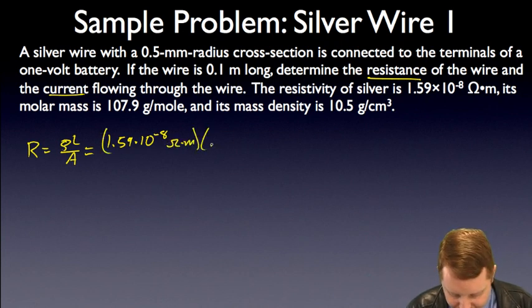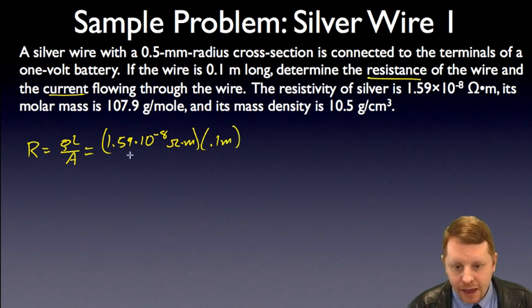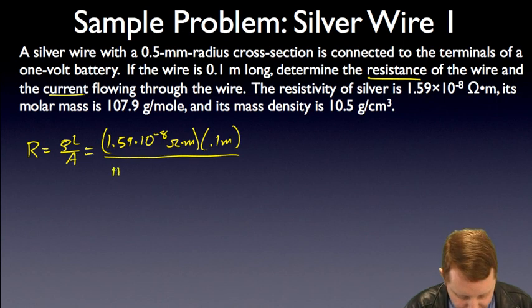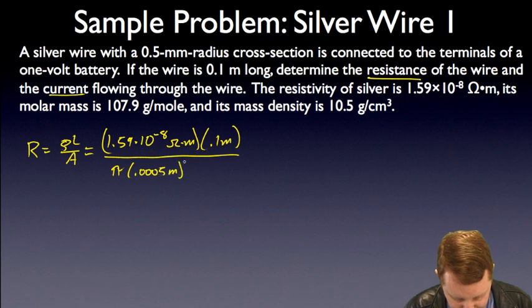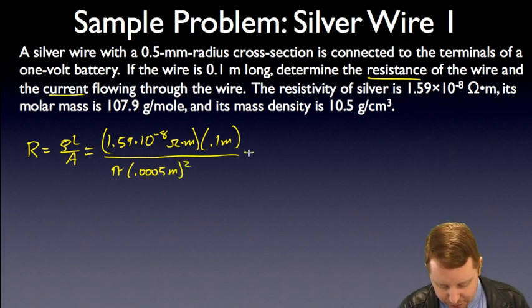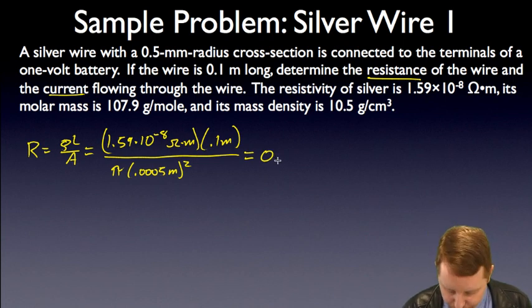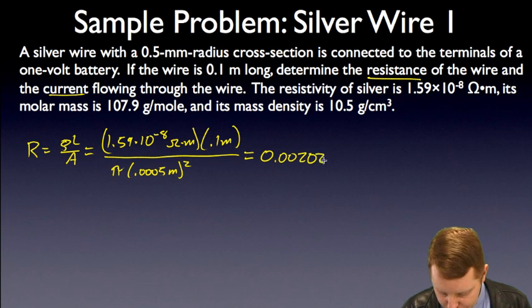Its length is 0.1 meter, and its cross-sectional area. Well, that's going to be pi R squared, pi, and the radius is 0.5 millimeters or 0.0005 meters squared, pi R squared. Run through this, meters squared in the denominator, meters times meters in the numerator. I'm going to be left with ohms, and running that through my calculator, that's about 0.00202 ohms.